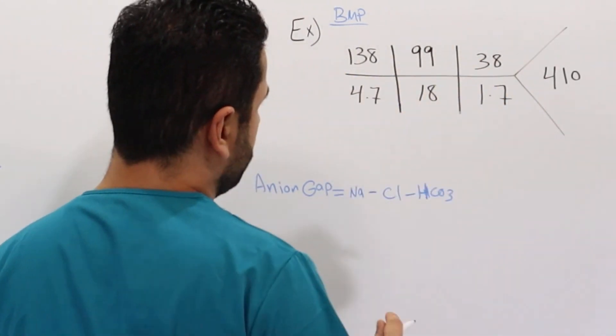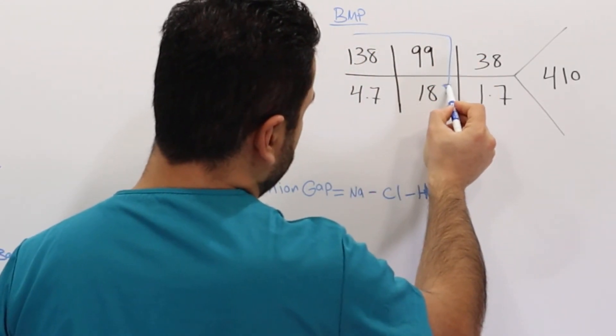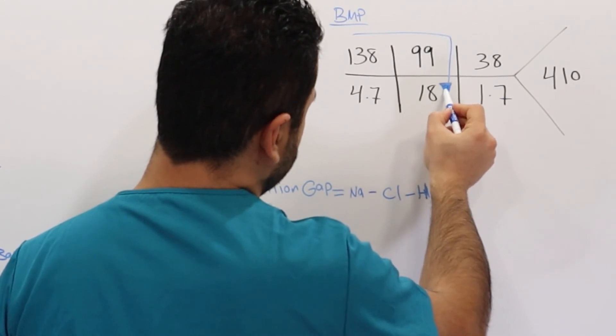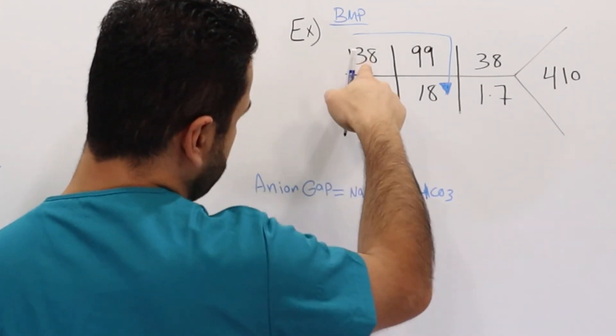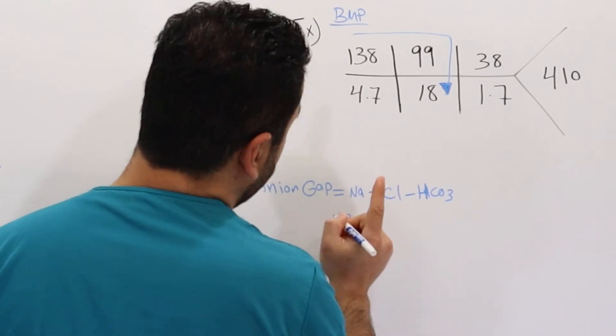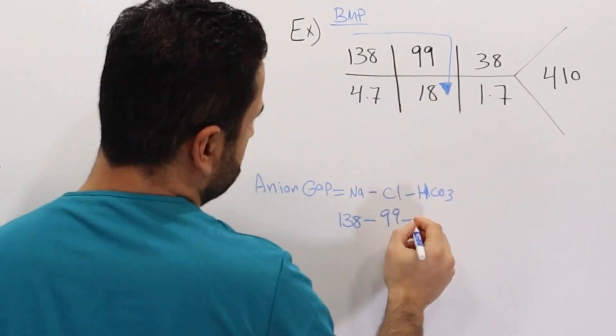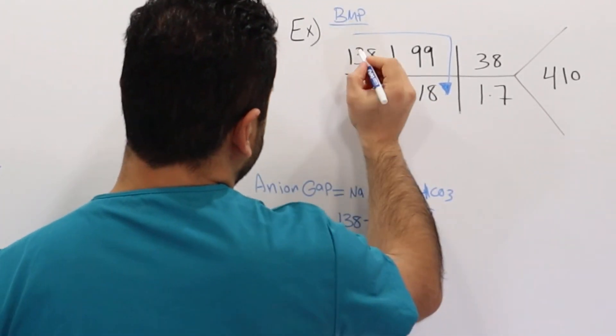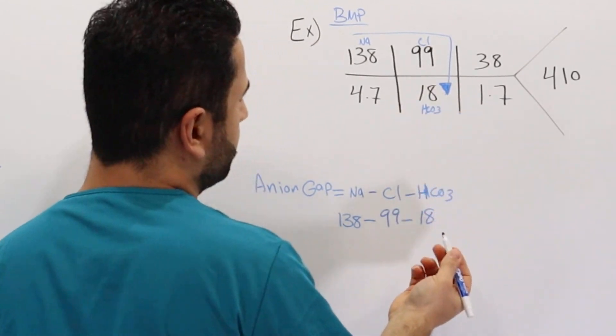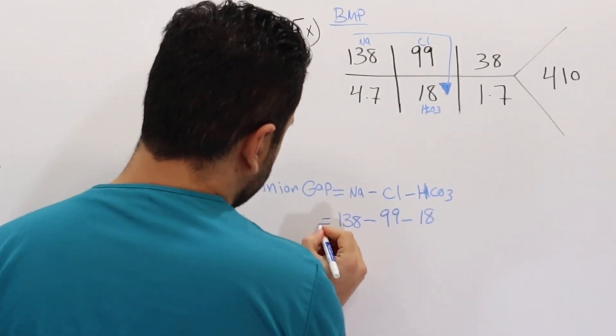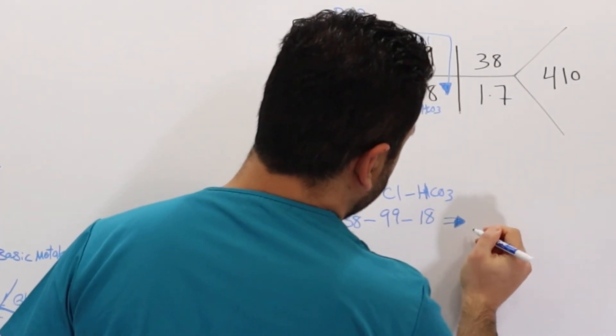And looking at these numbers, I need to know where sodium is. So like I said, if you do this arrow, you'll be able to find these three values, and it's really easy. This one minus this one minus this one. So what we have, sodium is the first one, it's 138, minus chloride which is 99, minus bicarbonate which is 18. So here it's sodium, chloride, and this is HCO3. So if you do this calculation, this is AG anion gap, you should end up with an answer that is 21.